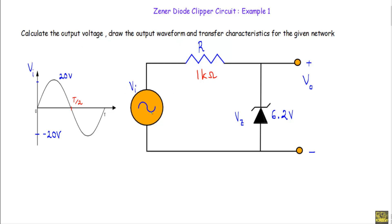This is our given circuit in which we are applying an input voltage Vi with a positive maximum of plus 20 and a negative maximum of minus 20 volt. In the circuit we have a resistor of 1 kilo ohm, and a Zener diode whose Zener voltage will be 6.2 volt. We are taking the output across this terminal to this terminal. The simulator will assume the Zener diode built-in potential is equal to 0.8 volt.